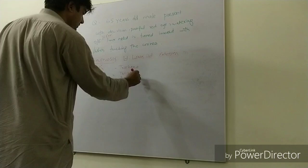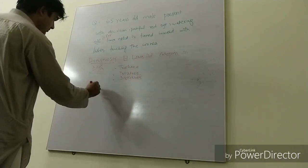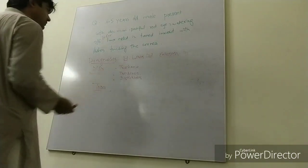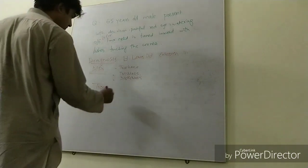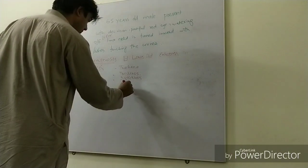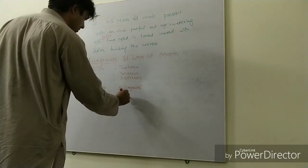For the types, you should divide it into congenital and acquired. In acquired, you should then further subdivide it into the most common one, involutional entropion, which we have shown you in the case, and then the cicatricial entropion.